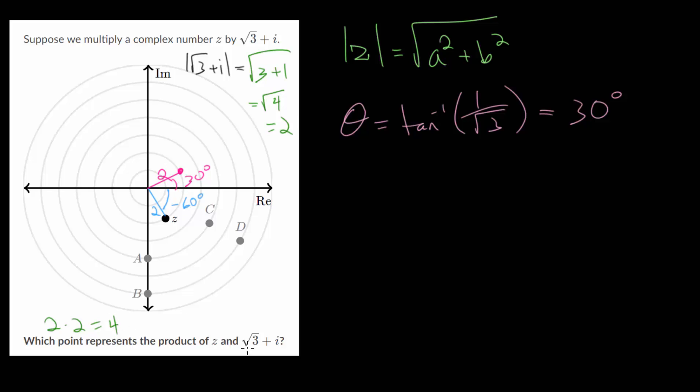The magnitude of our new complex number would just be 2 times 2 which is 4. The angle of our new complex number would be the sum of the two angles: 30 plus negative 60, which would be negative 30.